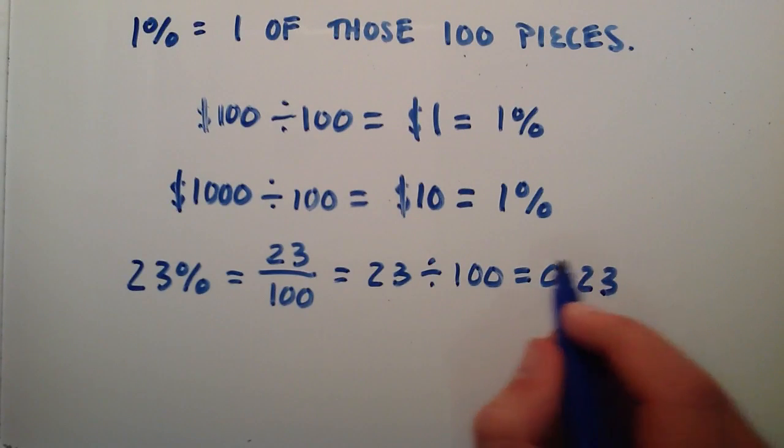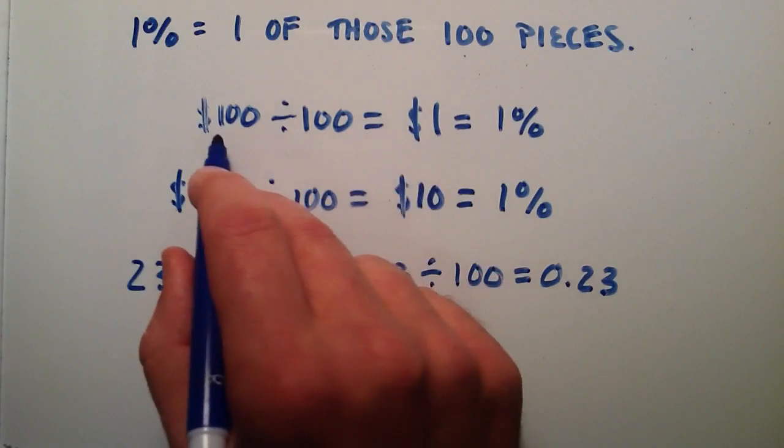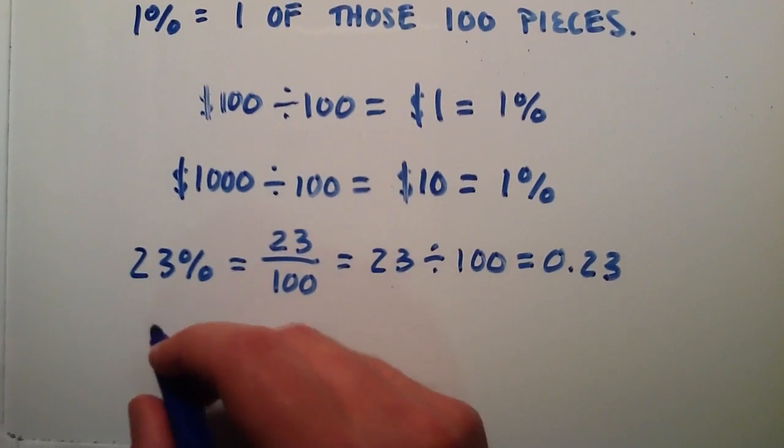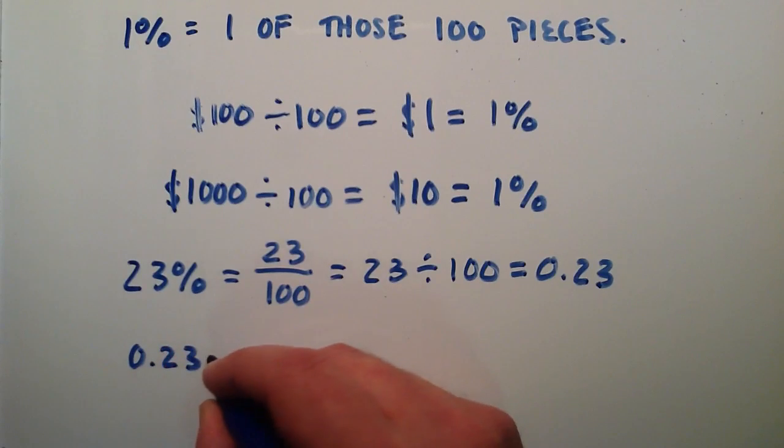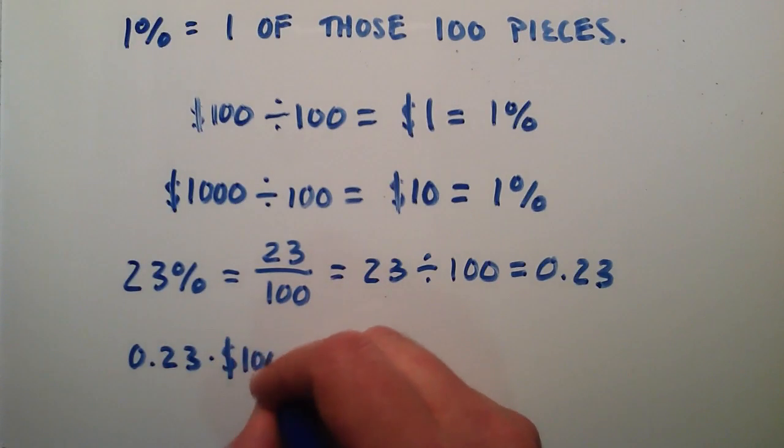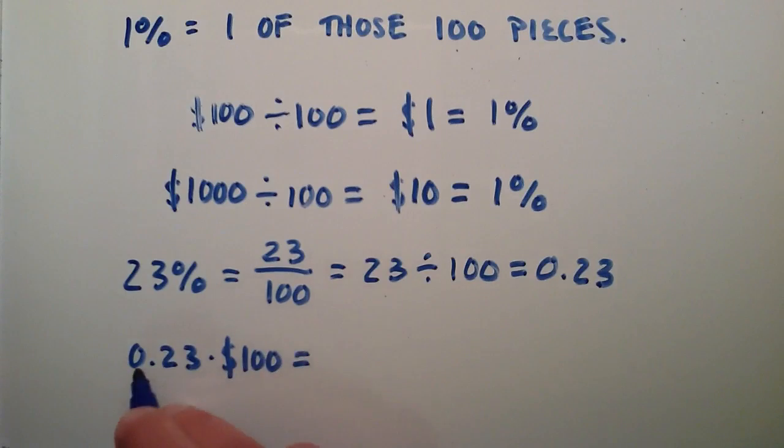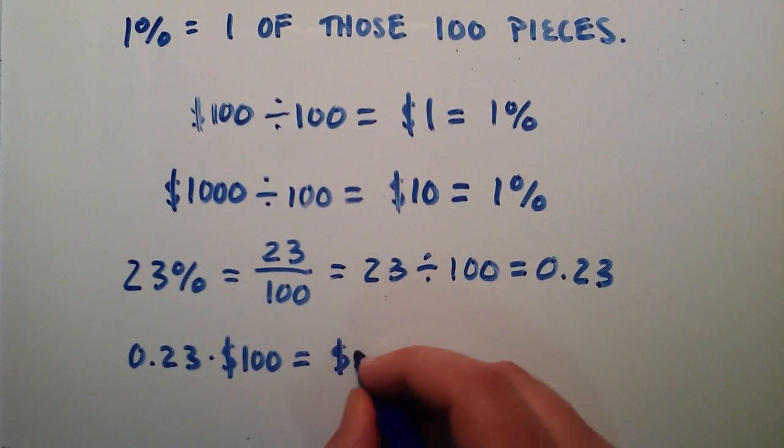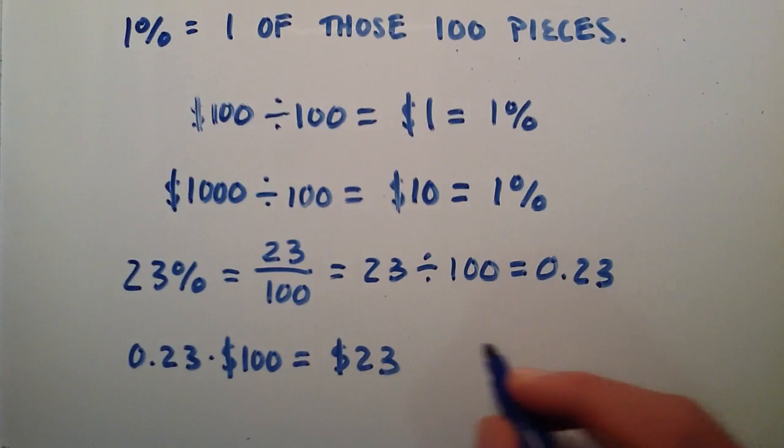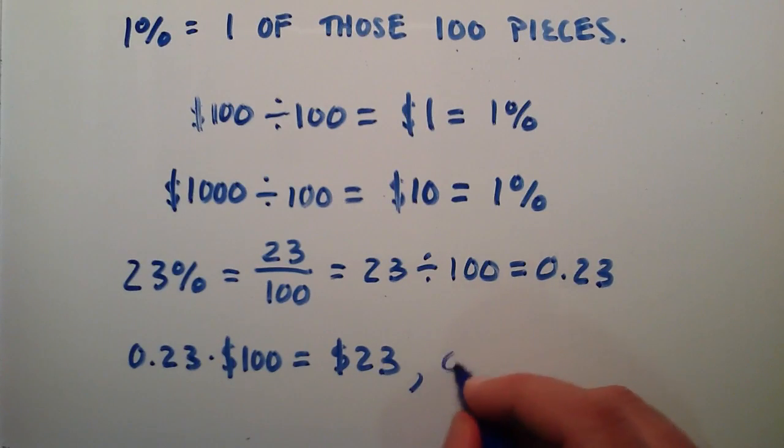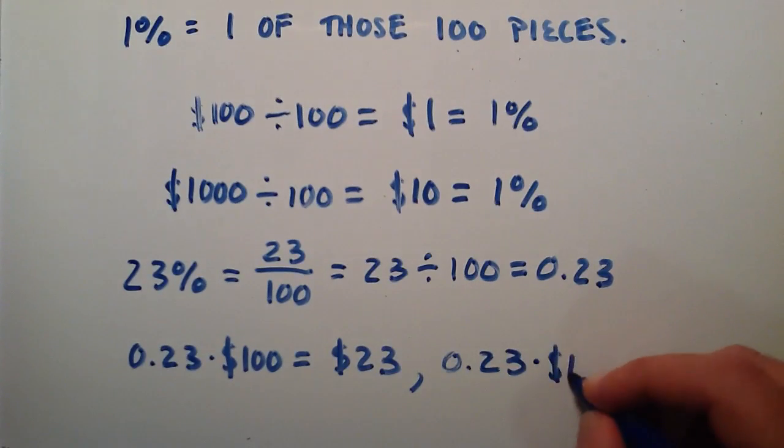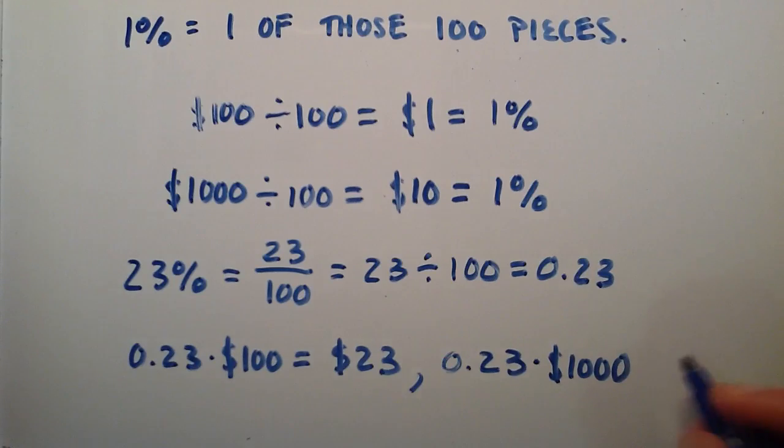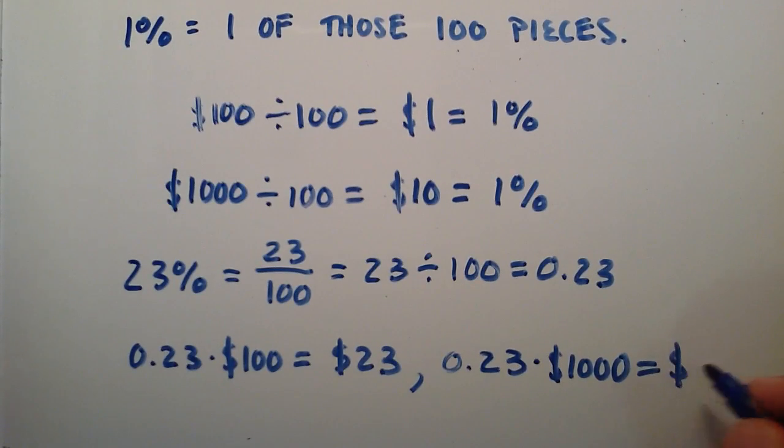And if we want to know what 23% of something like $100 is, we can simply multiply. So taking 0.23 times $100, 0.23 times 100 is equal to 23. And on the other hand, 23% of $1,000, we take 0.23 and multiply that by 1,000. And that gives us $230.